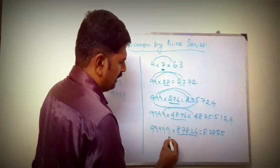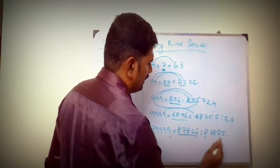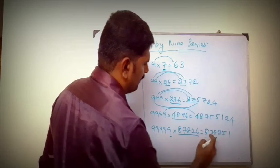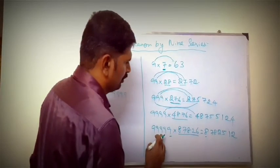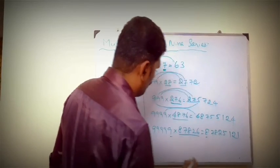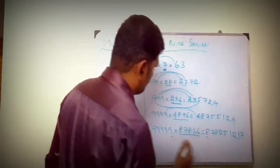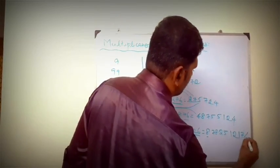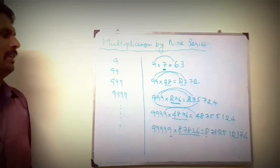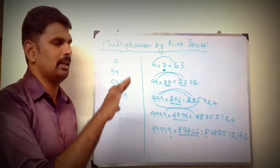88825 in the nine. 9 minus 8 is 1, 9 minus 8 is 1, 9 minus 7 is 2, 9 minus 8 is 1, 9 minus 2 is 7, 9 minus 5 is 4. In the nine series, learning different digit sets, if you watch this, you are using easy multiplication.